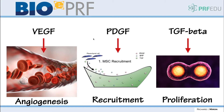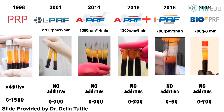All of this technology is based on the fact that we're trying to concentrate cells but also growth factors. The three main ones are VEGF, which helps promote angiogenesis; PDGF, which helps recruitment of cells; and TGF-beta, which helps the proliferation of cells. Whether you use PRP, PRF, APRF, or whatever may be thereafter, you're going to have advantages for all three of these properties.